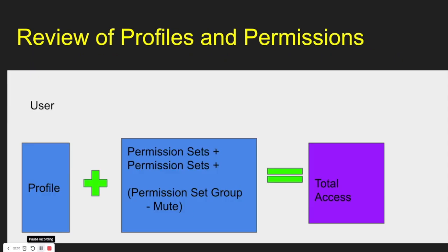Let's do a quick review of profiles and permissions. So we have a user record here. We have our profile, which gives us base permissions. We have permission sets — we can have multiple permission sets tied to that particular user. We have permission set groups, and within that group we can have multiple permission sets tied to it. Then we have our mute permissions. As you can see, mute permissions only apply to that particular group, not the user's overall access. So whatever profile access I have, plus whatever permission sets outside of my profile I have, plus whatever my permission set group dictates — that equals my total access.